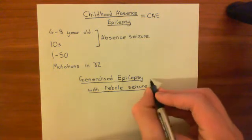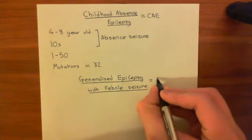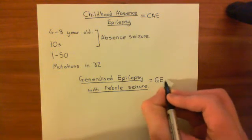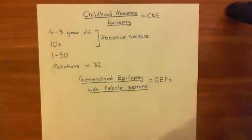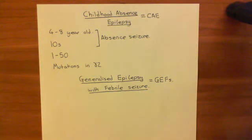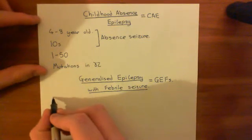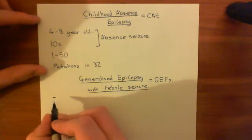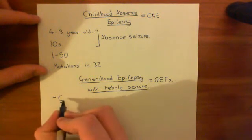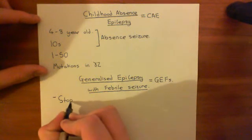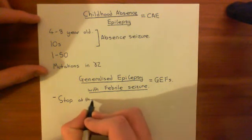Generalized epilepsy with febrile seizures, often abbreviated to GEFS, involves conventional epileptic seizures — uncontrolled contraction of skeletal muscle cells. Again, they are caused by mutations in gamma-2. And for some reason, they generally only occur up to the age of 6 years old — they generally stop at the age of 6.